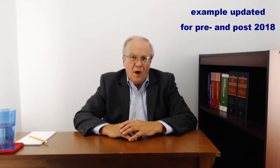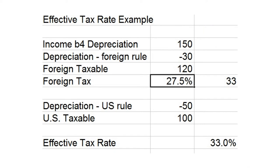So let's do a quick example. Assume everything is U.S. dollars to begin with, and there's only one item. I have 150 of otherwise passive rental income before depreciation, and there's no foreign withholding tax. The foreign rules allow a depreciation deduction of 30, so net income subject to foreign tax is 120. The foreign tax rate is only 27.5%, so the total foreign tax is 33. For U.S. purposes, assume a depreciation deduction of 50, so net taxable income for the item under U.S. rules is 100. Thus, the foreign tax of 33 is at an effective tax rate, based on U.S. principles, of 33%.